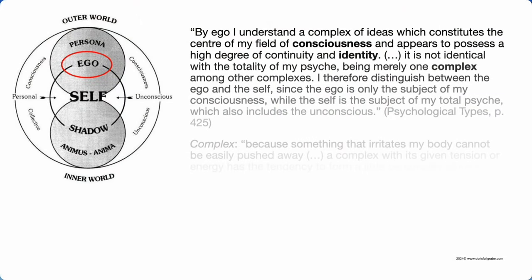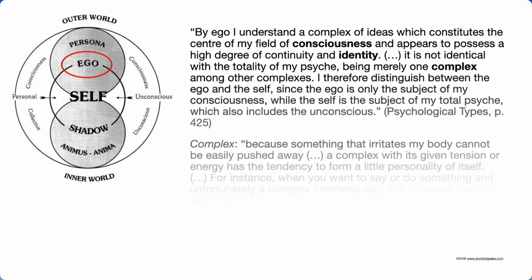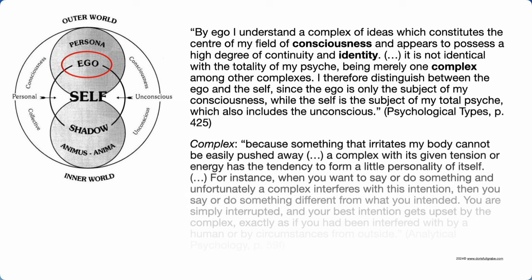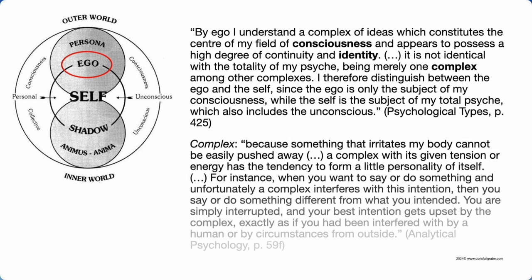Jung's definition of a complex is an agglomeration of associations — a heaping bundle of associations that can have traumatic, painful or just strong characteristics that are difficult to handle. Finding it hard to handle something also shows up in physiological reactions like an upset stomach or high blood pressure. When you want to say or do something and unfortunately a complex interferes with this intention, then you say or do something different from what you intended — you are simply interrupted, exactly as if you had been interfered with by a human or by circumstances from outside.